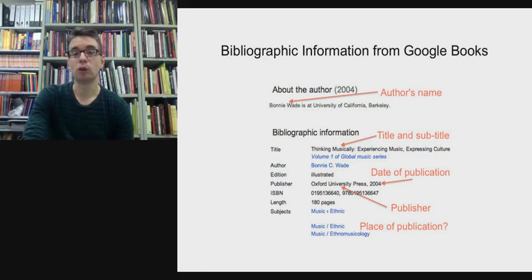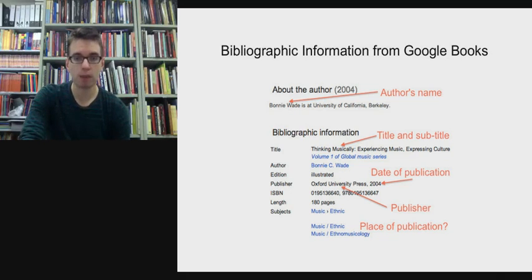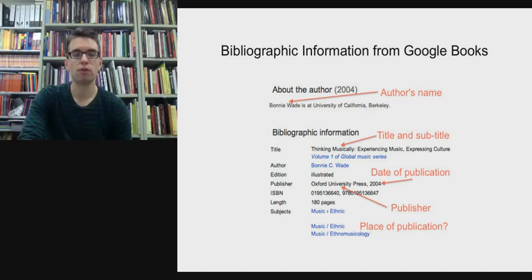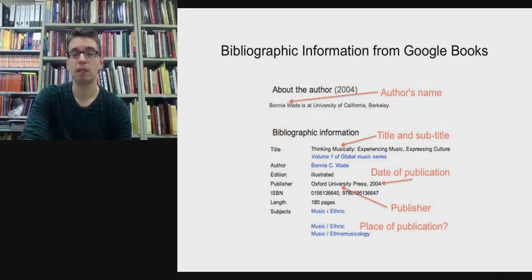We could look on Google Books, and many students do use Google Books to find information. This is the reference for the title on Google Books — it tells us the author's name, the title and subtitle, the date of publication (2004), and the publishing house, which is Oxford University Press. So that's nearly everything we need, but it doesn't tell us the place of publication.